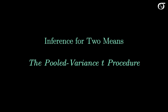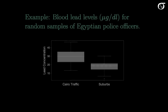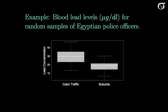Let's take a look at the pooled variance T procedure. We'll start with an example: blood lead levels for random samples of Egyptian police officers. We have Cairo traffic officers on one side and officers from the suburbs on the other. It looks like Cairo traffic officers have a higher blood lead level, with a median around there, than those in the suburbs.